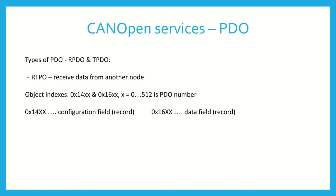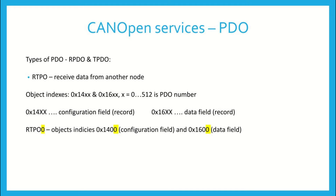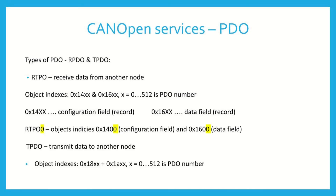Index 0x1600 can be called a data field because it contains a pointer to an object to receive in the Object Dictionary. If you want to configure a Receive PDO object — for example, to read an angle from a position encoder — and it will be your first PDO, so PDO 0, you have to set two entries in the Object Dictionary. The first entry has index 0x1400 with 0 at the end, indicating that your PDO number is 0. The next entry has index 0x1600 with also 0 at the end. The same applies for Transmit PDO, but the indices start from 0x1800 and 0x1A00 respectively.